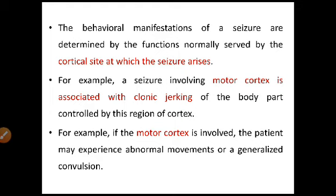The behavioral manifestations of a seizure are determined by the functions normally served by the cortical site at which the seizure arises. In the region of cortex where the seizure arises, the area responsible for certain functions will have those functions affected. For example, a seizure involving the motor cortex is associated with clonic jerking of the body part controlled by that region of cortex — that kind of clonic jerking as a symptom will appear.